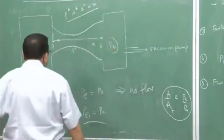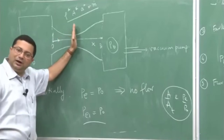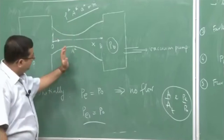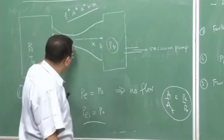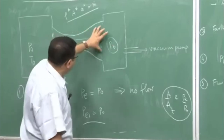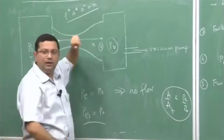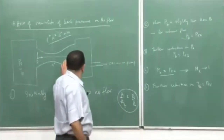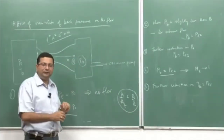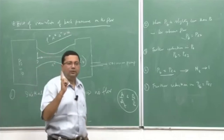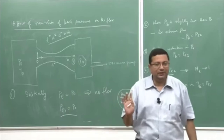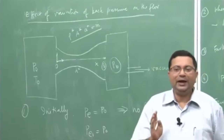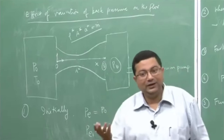In a converging-diverging nozzle, the exit pressure is not p* — it depends on the exit area. The exit area variation gives only one isentropic supersonic solution. Therefore, for only a specific value of exit pressure do we get an isentropic supersonic flow through the nozzle.